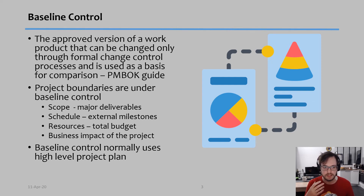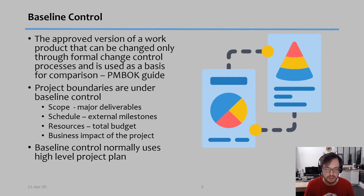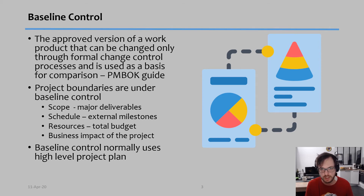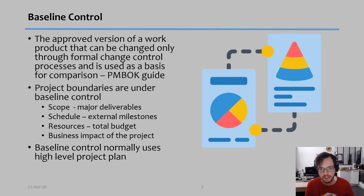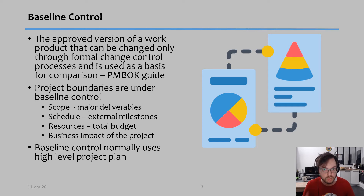Project boundaries are under baseline control, and we're talking about scope, schedule, and resources. This is the plan we're going to be comparing ourselves to during the project, and it also includes the business impact of the project. Baseline control will normally use a very high-level project plan — it makes more sense to compare the work we're doing to the major categories or main objectives of each phase, rather than every single detailed task.